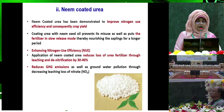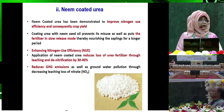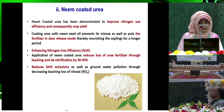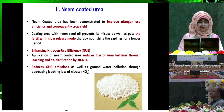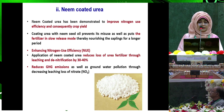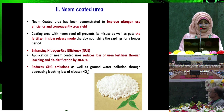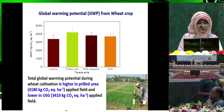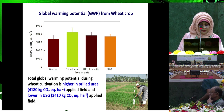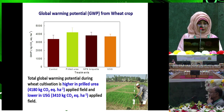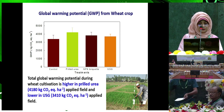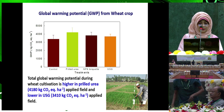Neem-coated urea: the urea is coated with neem seed oil to prevent its misuse and puts the fertilizer in a slow-release mode, thereby nourishing the saplings for a longer period. It improves nitrogen efficiency and crop yield, enhancing nitrogen efficiency and reducing GHG emission. The global warming potential from wheat crop shows that the total global warming potential during wheat cultivation is higher in prilled urea applied fields and lower in USG applied fields.